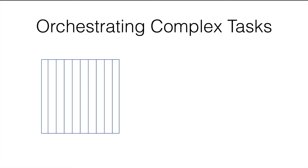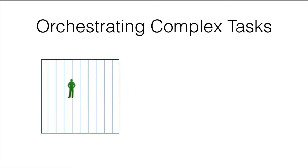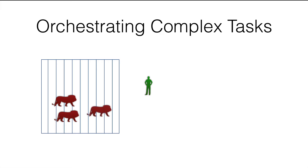The example from the book is that we have a cage which has some lions in it, and the task we want to achieve is to clean the cage. At a high level, the sequence will be: remove all the lions from the cage, clean the cage, and once it's clean, put back all the lions. Now let's say the zoo has only one employee. That employee will remove the lions one after the other, and once all the lions are removed, go into the cage, clean it, and put back all the lions. If we have one employee, we do not need any orchestration.